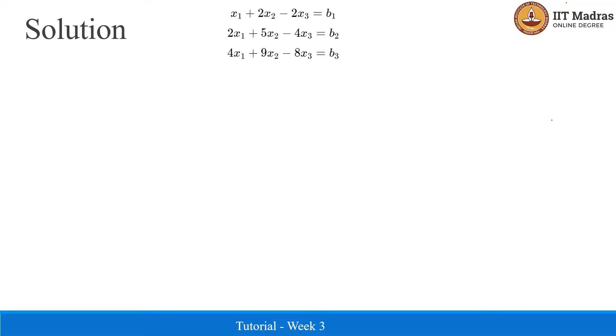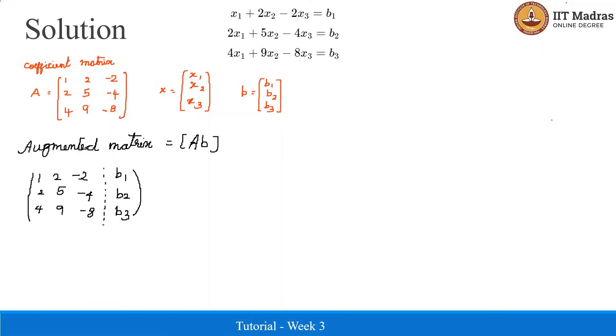From the given system, we get the coefficient matrix, X vector, and B vector. The first condition we are going to arrive at is by solving the system of equations Ax equal to B. In order to do so, we have to augment the B vector with the A matrix and bring it to its reduced form, which is the row echelon form. This is the augmented matrix.